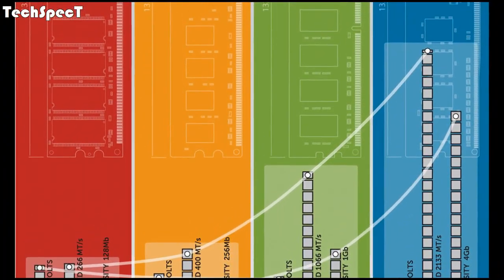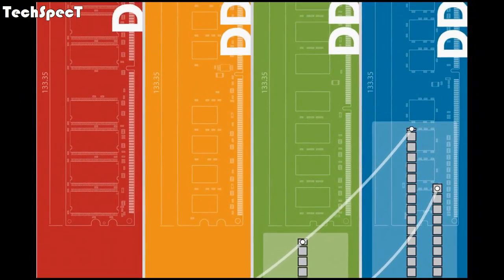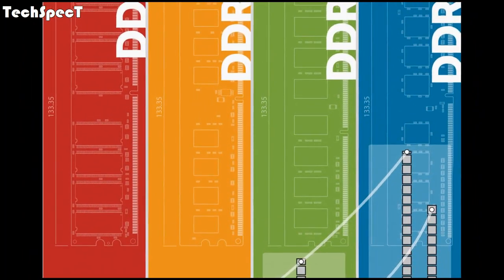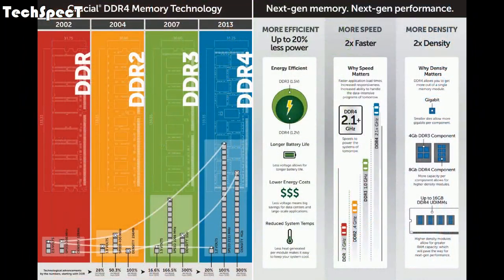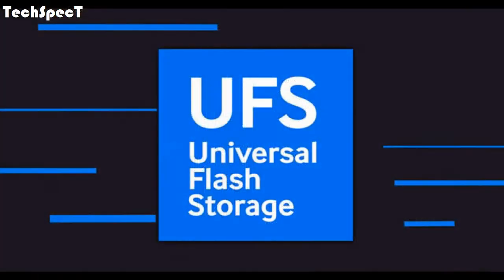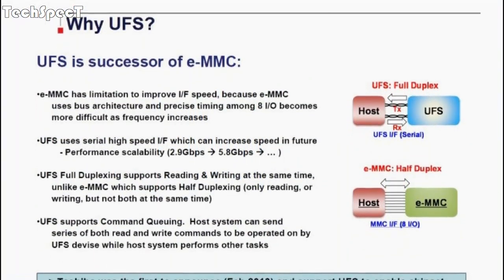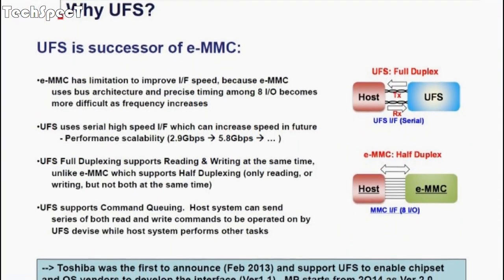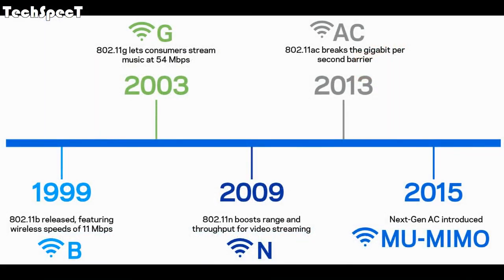Memory speed: 1866 MHz. Memory type: Dual Channel LPDDR4. Storage: UFS 2.1 Gear 3, SD 3.0. Part number: 8998.